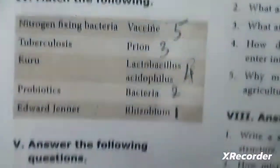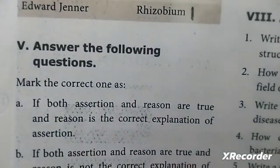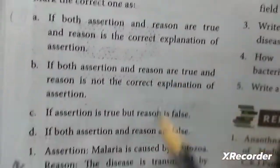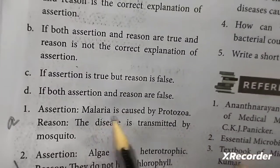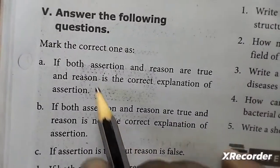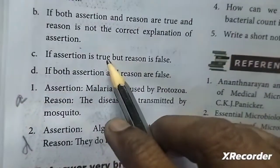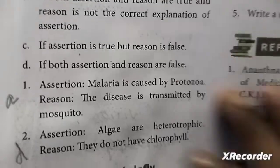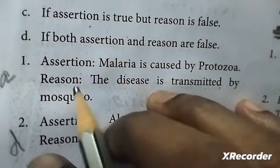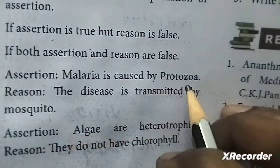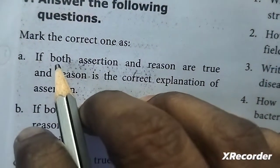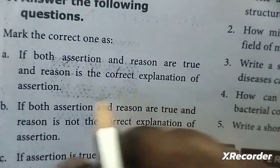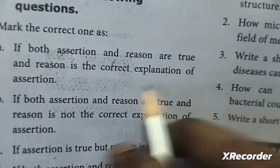Answer the following questions. Mark the correct one as: first one - assertion: malaria is caused by protozoa. Reason: the disease is transmitted by mosquito. If both the assertion and reason are true and reason is the correct explanation of assertion.